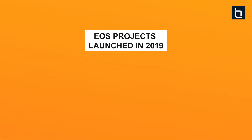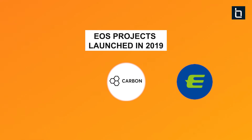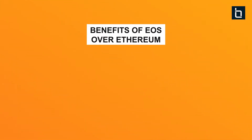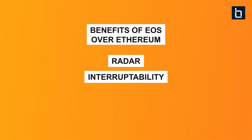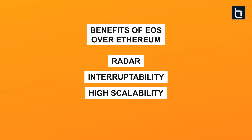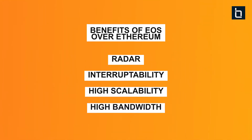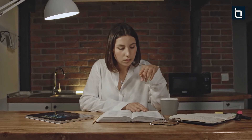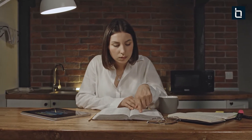In 2019, we saw a huge number of EOS stablecoin projects such as Carbon, Tether, EUSD, and EOSDT launched on EOS. People preferred building stablecoins on EOS compared to Ethereum because of greater interoperability, high scalability, and transaction bandwidth. Weighing the pros and cons of all available platforms, you can make an informed decision on the platform you want to work on.